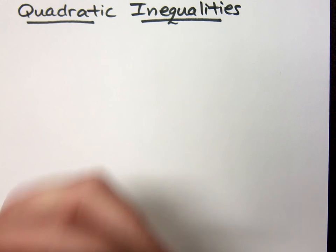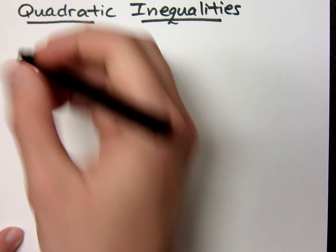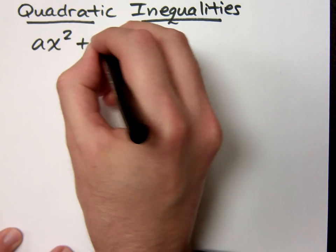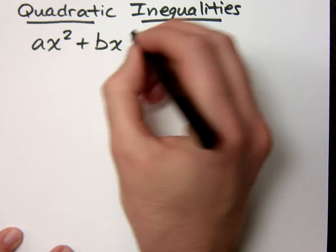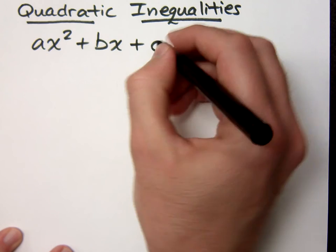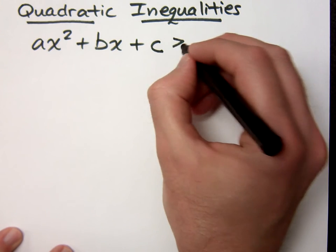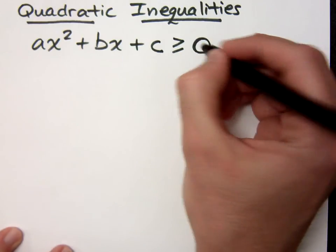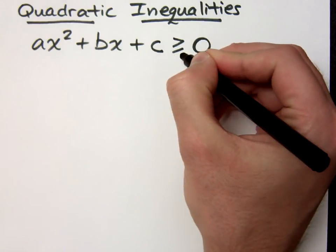As we continue our discussion with inequalities, let's look at quadratic inequalities. Quadratic inequalities will be inequalities that take on the form of a quadratic, like ax squared plus bx plus c, and then greater than, maybe greater than or equal to, or less than or equal to zero. You just have some kind of inequality here.